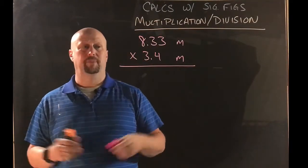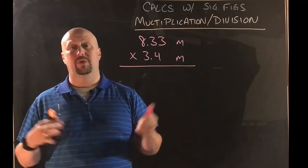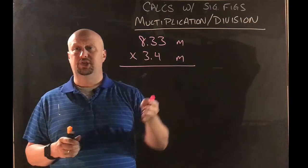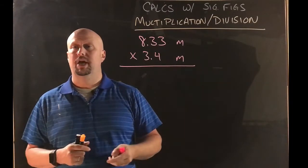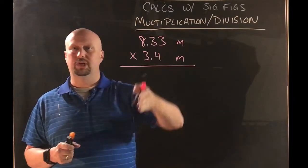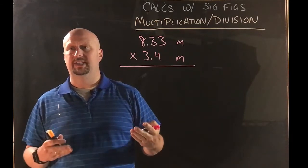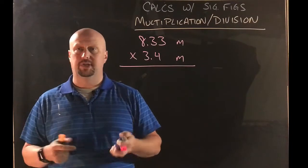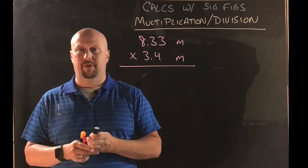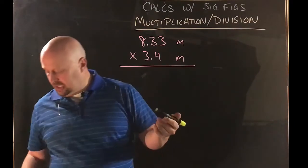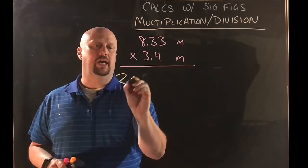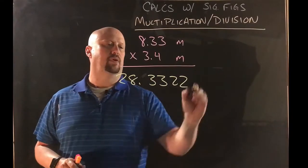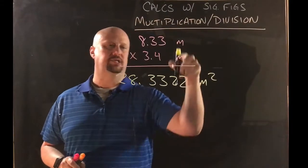All right, so here's the multiplication problem. This is going to work out slightly differently because what matters for multiplication and division isn't the precision so much—I mean, that's part of what we're doing, but it's not how many decimal places or what unit we stopped at. What really matters in this case is how many sig figs does each of the things have. So the first thing I'm going to do is go ahead and punch this in, get my number out. So we plug this into the calculator and we get 28.3322.